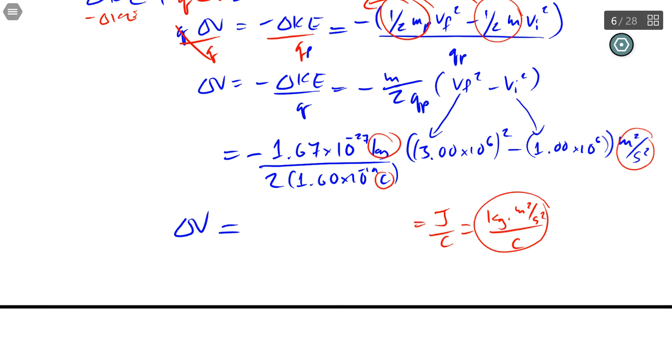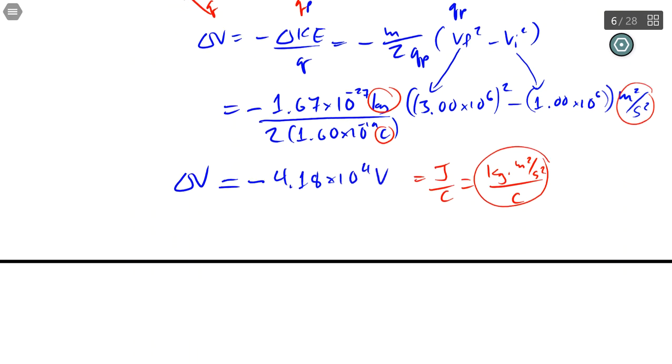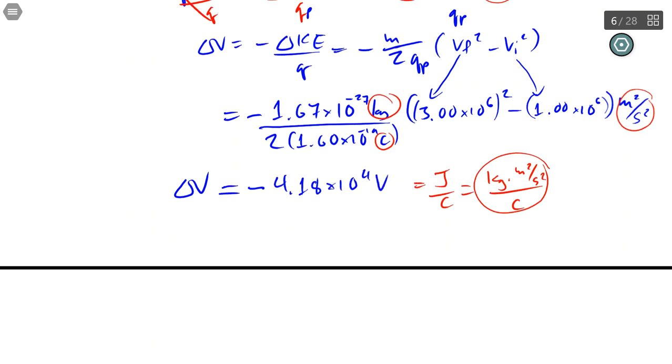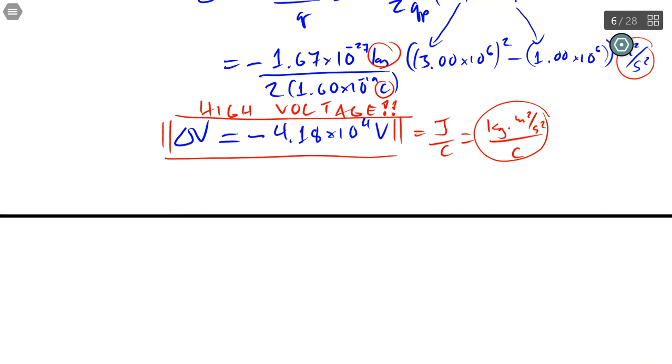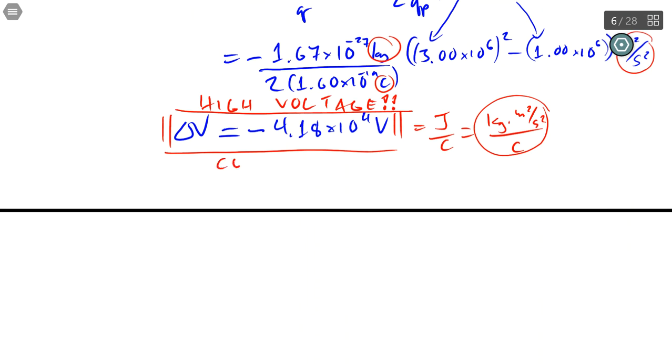Now if you calculate all of that, you notice that the minus sign still stays. And you get something that is pretty high voltage, that's about 41,000, 42,000 volts. If you want to accelerate a proton to those speeds, it's safe to say that that is high voltage. And if there's power directly connected to those plates, I would say, don't touch that.